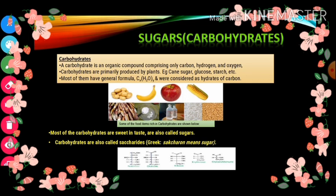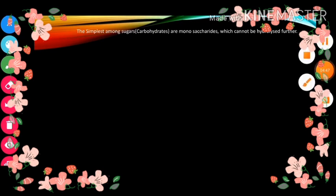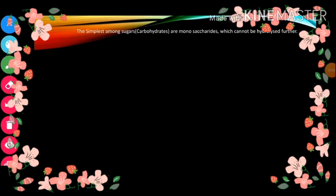The simplest among sugars — the simplest among carbohydrates — are monosaccharides, which cannot be hydrolyzed further. So the most simple form of carbohydrate is monosaccharides. It is the simplest form because it cannot be hydrolyzed further.